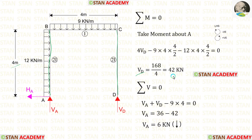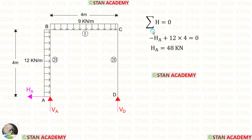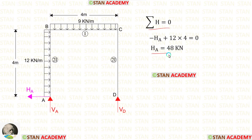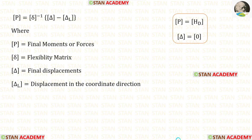These are the final vertical reactions. Let us apply sigma H = 0 and find HA.